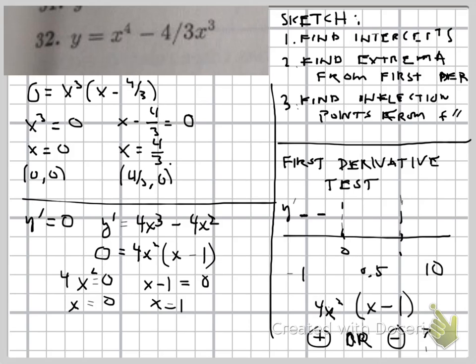If we plug in 0.5, we also get a negative, because 4x squared times x minus 1 is still negative. And then at 1, if we plug in 10, then obviously everything is positive. And so in this region.